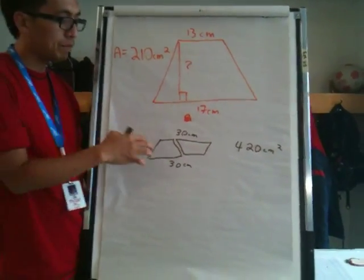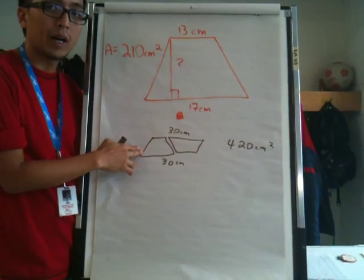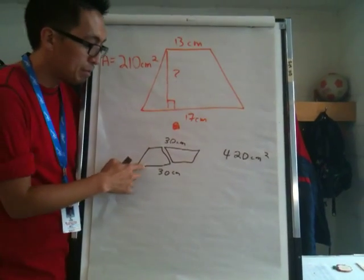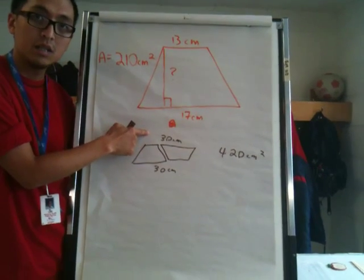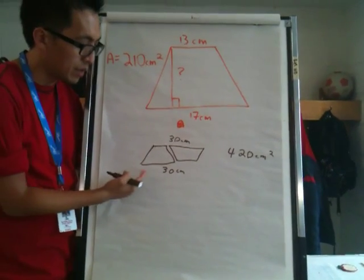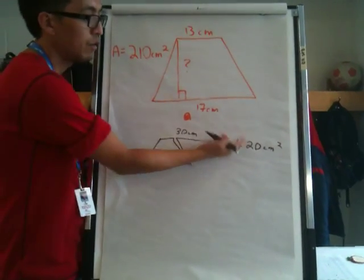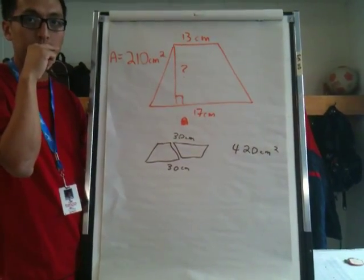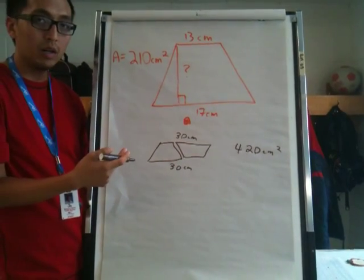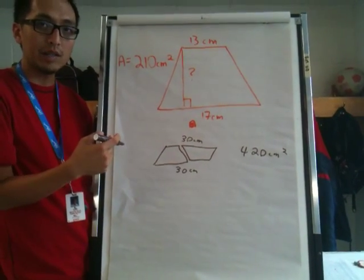So now that we know that, we also know that to figure out the area of a parallelogram is base times height. So now we're just asking ourselves, what do you times 30 by to get 420? You can do this through trial and error, you can do this many different ways.